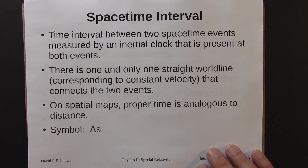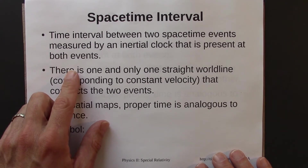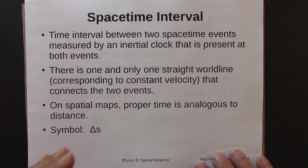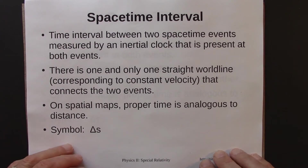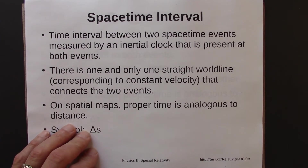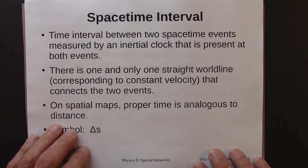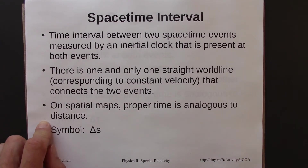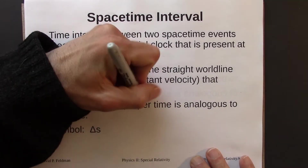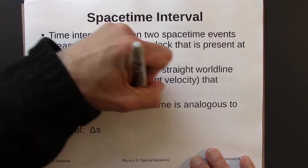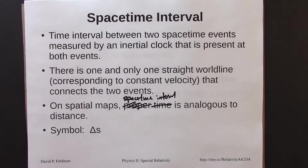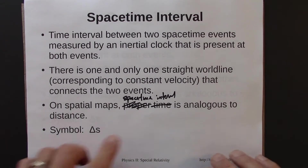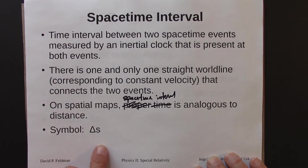We've also talked about the space-time interval. That's a time interval between two space-time events, measured by an inertial clock present at both events. The clock starts at event A and goes to event B, moving at constant velocity — a straight world line on a space-time diagram. There's one and only one such straight world line connecting those two events, so the space-time interval is unambiguous. It's analogous to distance between two points, and the typical symbol is delta s.